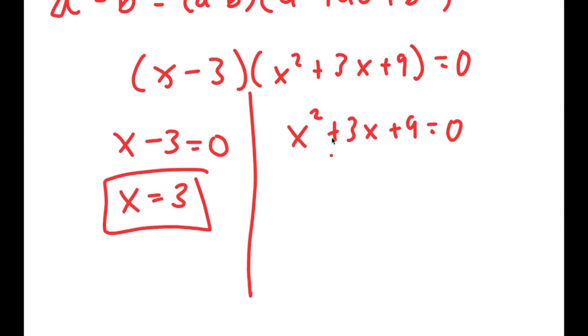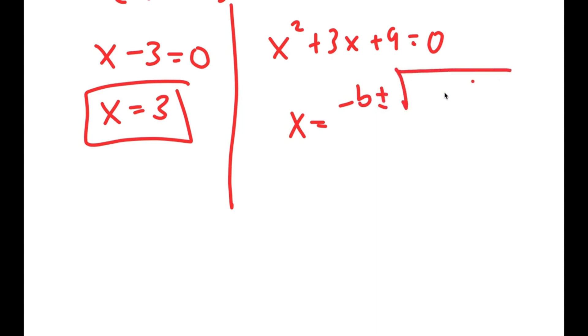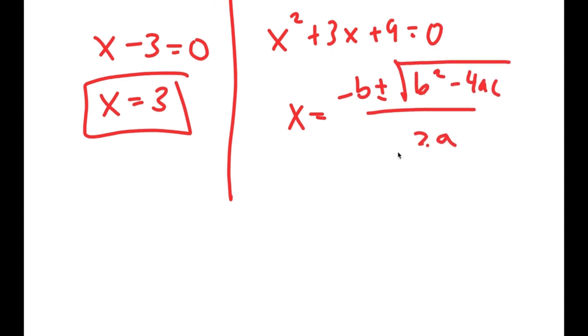So this is one solution. And now for x squared plus 3x plus 9 equals 0, I can use the quadratic formula, which is negative b plus or minus the square root of b squared minus 4ac, all over 2a.